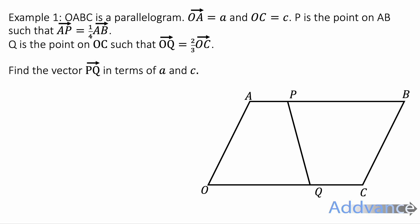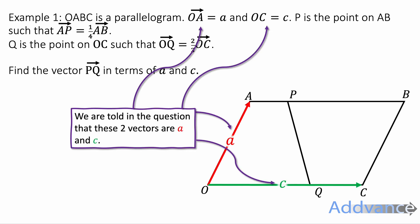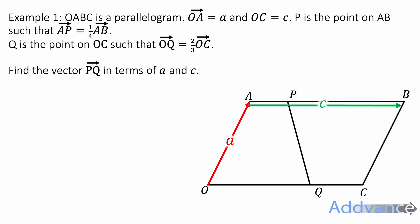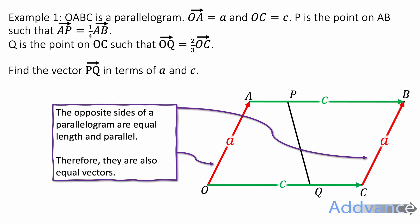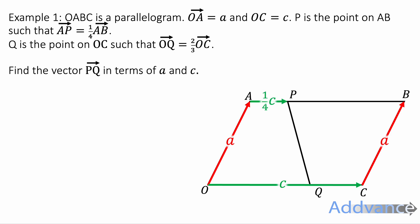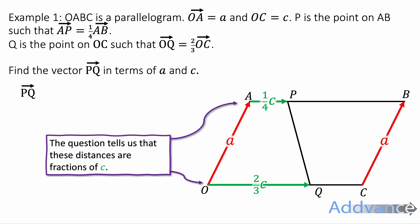We'll start by labeling a and c. OA is a and OC is c. And that's what it says in the question. We also know that the opposite sides are equal length and they are parallel because it's a parallelogram. So we can say that these vectors are all the same. We're also told that the top length from A to P is a quarter of c and at the bottom OQ is two thirds of c.